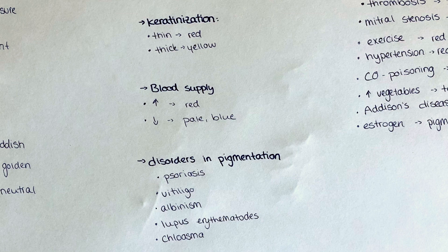Another factor that influences the appearance of the skin color is vascularization and blood supply. Those body areas that are highly vascularized appear more reddish in tone than less vascularized areas. In situations of poor blood perfusion, the tissues can change to a pale to bluish color also.